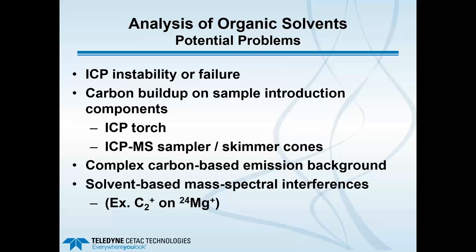When approaching volatile organic solvents with boiling points under 120 degrees C, there are a number of potential problems. These include ICP instability or failure, carbon buildup on sample introduction components such as the ICP torch and the ICP-MS sampler and skimmer cones. In addition, we can have complex carbon-based emission background, which can hinder lower detection limits, and in ICP-MS we can have solvent-based mass spectral interferences. One example is the carbon dimer C2+ at mass 24, giving an interference on magnesium-24, particularly when using quadrupole ICP-MS with unit mass resolution.